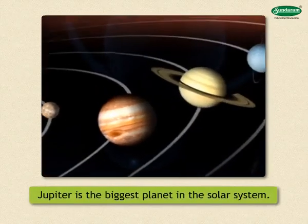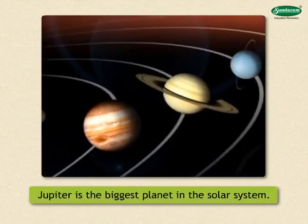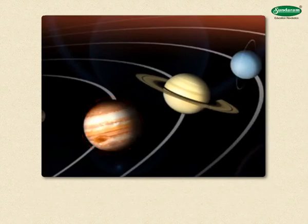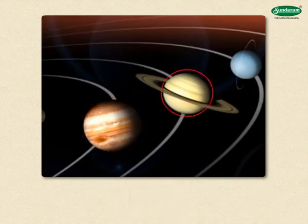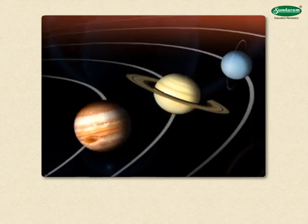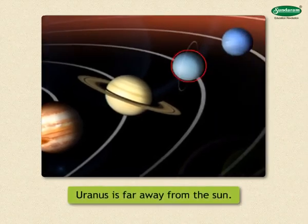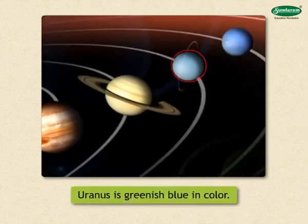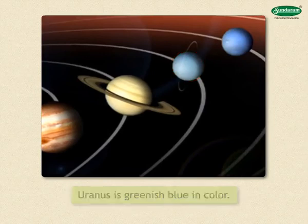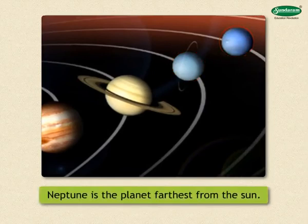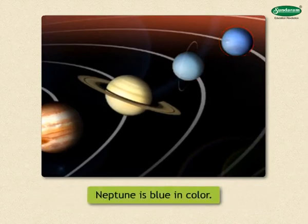The biggest planet in the solar system is Jupiter. The second biggest is Saturn. There are three rings around Saturn, which are visible through a telescope. The planet Uranus is far away from the sun and is greenish-blue in color. Neptune is the planet farthest from the sun and is blue in color.